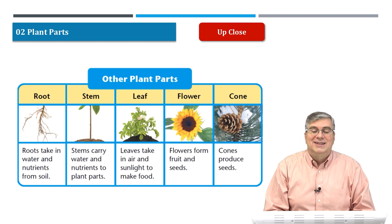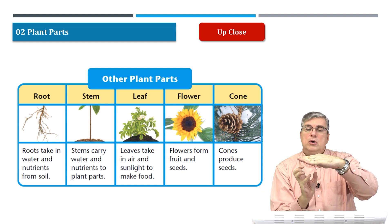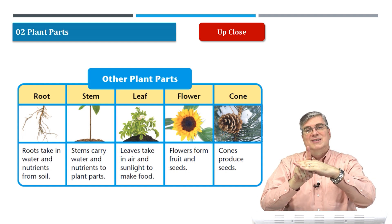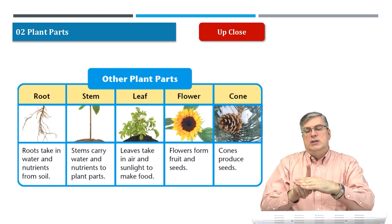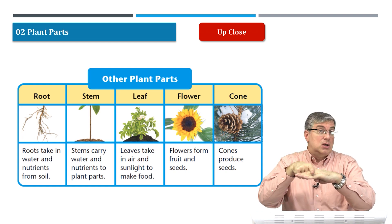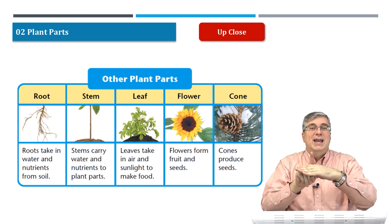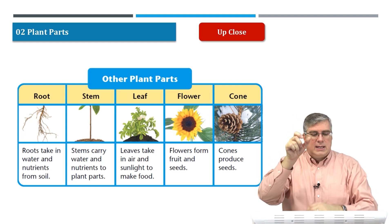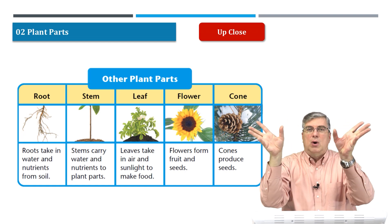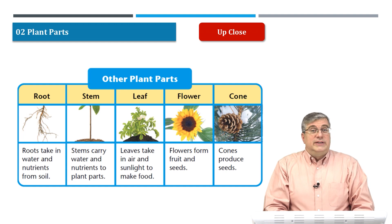Next we have the stem. The stem is usually the part you see sticking up from the ground — underneath are the roots, which support the stem. The stem is usually a long, straight part, though sometimes it can be on the ground and curvy. For trees and many other plants, the stem is straight and long, and it carries water and nutrients to the different parts of the plant, such as the leaves or the branches.